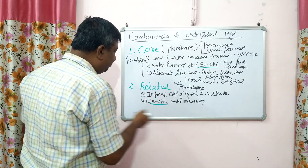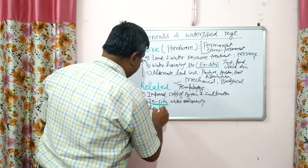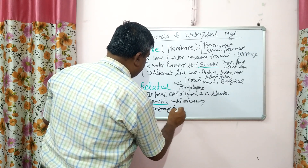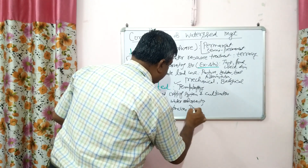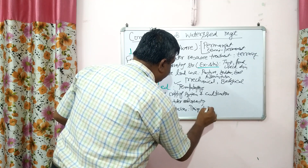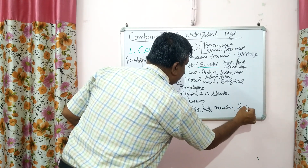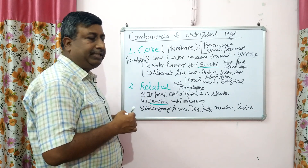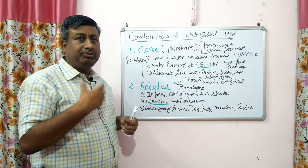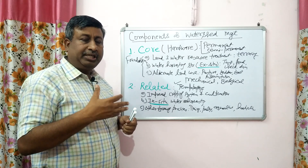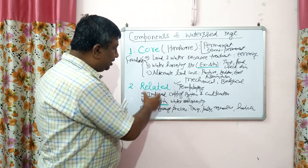The next related practice involves other farming practices which increase system productivity and profit. For example, dairy, poultry, aquaculture, and horticulture — we can call it a farming system or integrated farming system — so that the output of different components may be utilized as input, farm income is increased, sustainability is maintained, and waste is utilized.